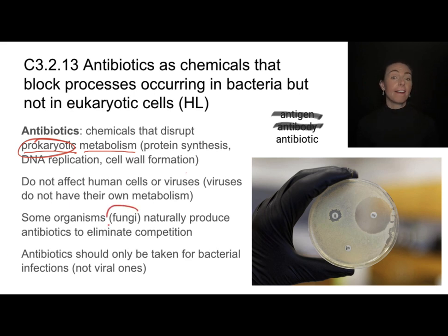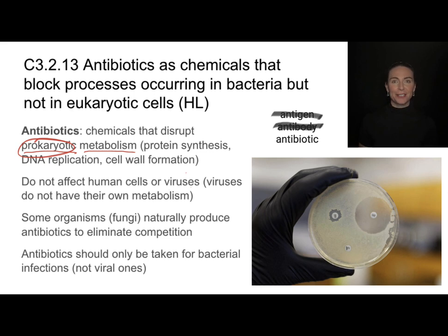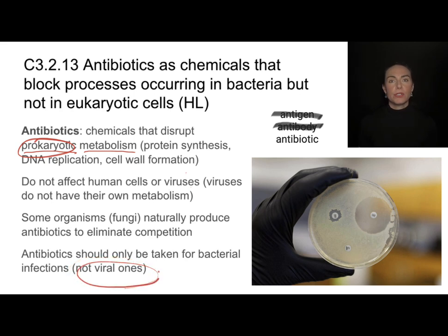Some organisms like fungi naturally produce antibiotics. Here's a fungus growing on a plate that has a lot of bacteria growing on it — you can see that there's no bacteria growing around this fungus, because the fungus secretes natural antibiotics. The goal of that is to eliminate competition for resources with nearby bacteria. This is actually how all of those early antibiotics were discovered and manufactured. We should remember that with antibiotics, we should only be taking them for bacterial infections — they do not work against viruses because viruses don't have a metabolism.